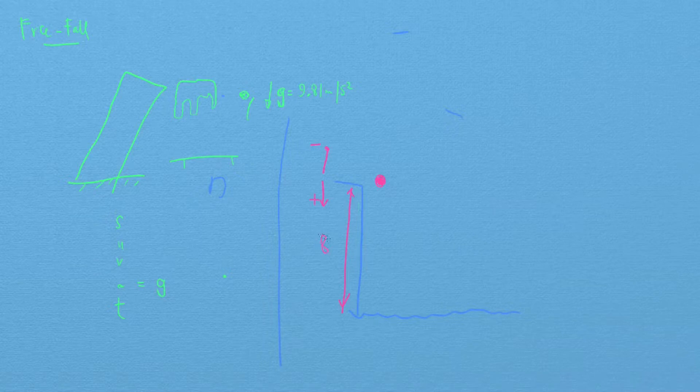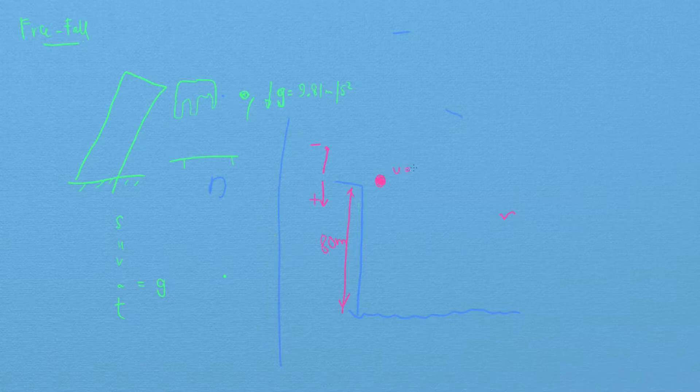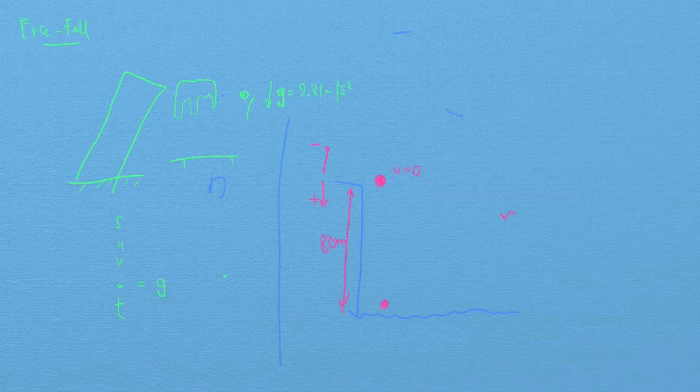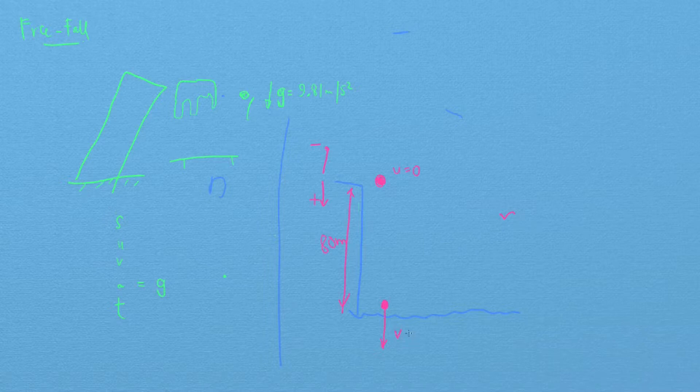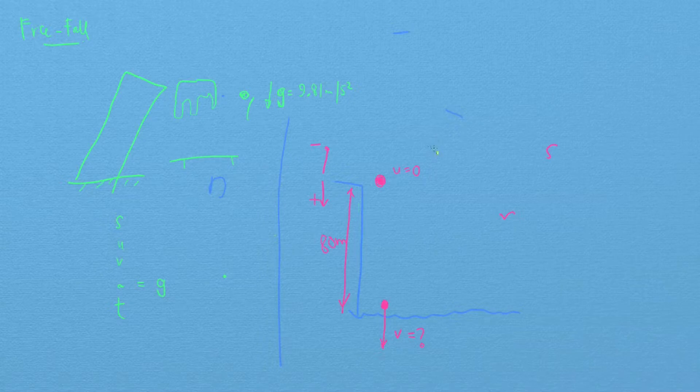Let's say the cliff is 80 meters high and I'm dropping the object from rest, so the initial velocity is zero. The question asks, with what speed or velocity will it enter the water here? So what is V? Let's set it up. I'm going to have S, U, V, A, T.